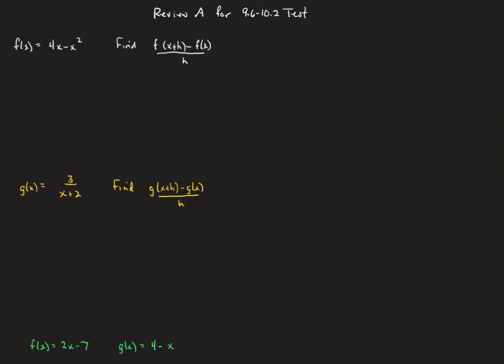We're going to take f of x plus h, which is going to be 4 times (x plus h) minus (x plus h) squared, then minus the quantity f of x, which is 4x minus x squared, and that's all going to be over h. So we distribute that 4 to get 4x plus 4h, then square out (x plus h): that's x squared, plus twice the product 2xh, plus h squared.